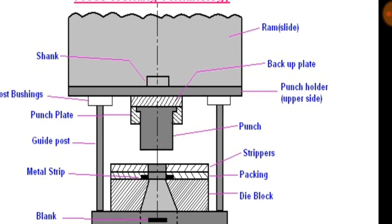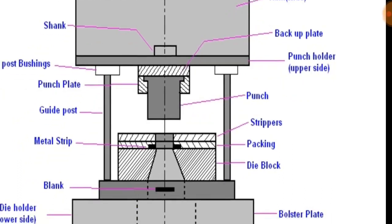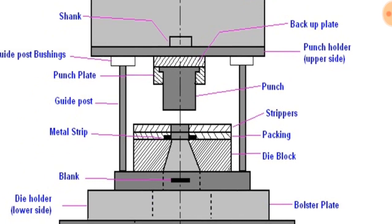Stripper: it is a plate which is used to strip the metal strip from a cutting or non-cutting punch or die. It may also guide the sheet.